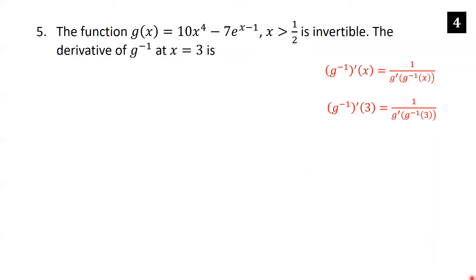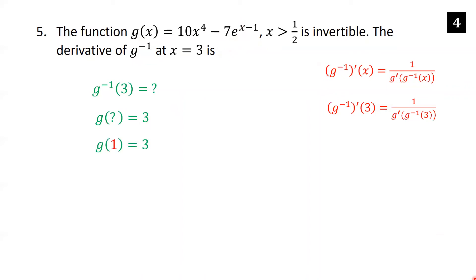Don't make the mistake of plugging 3 in for x in g — we want g inverse of 3, which means: g of what equals 3? In this case we can't easily solve algebraically, so we guess and check. The only value that makes sense is x equals 1, because that's the only thing that makes the e term go away. Checking: g of 1 is 10 times 1 to the fourth minus 7 times e to the zero, which is 10 minus 7, which is indeed 3.